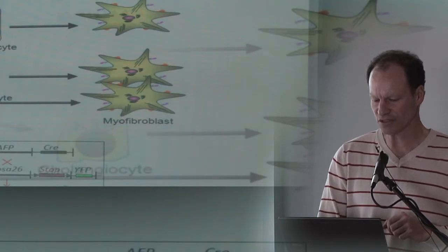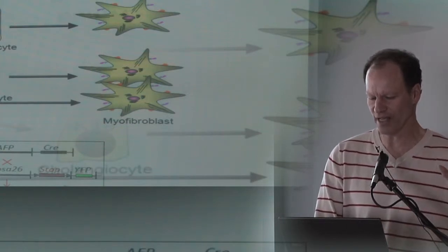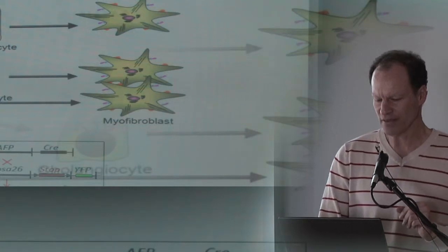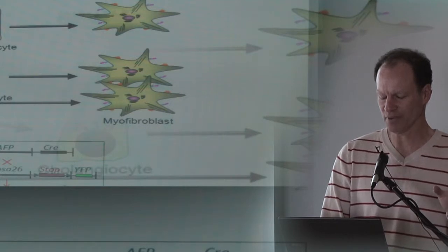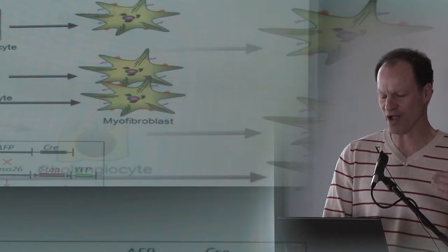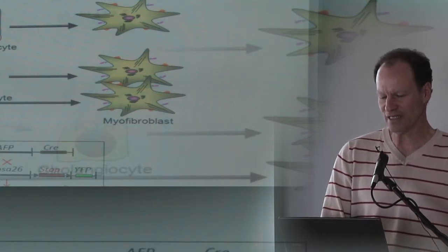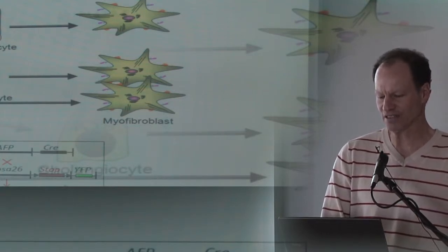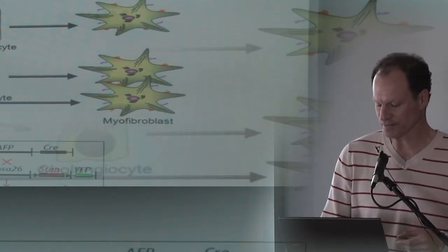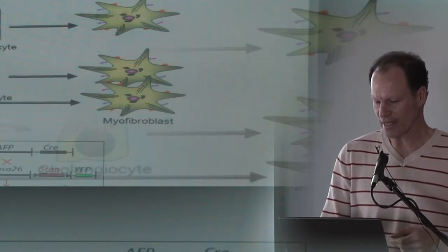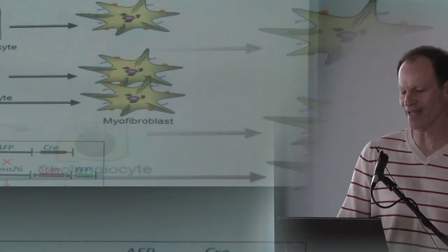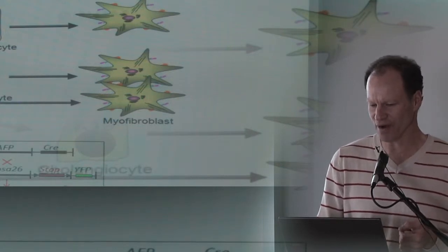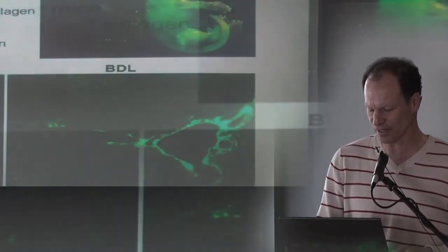The experiment works as shown below, which has become a classic way of cell fate marking. You cross the alpha-fetoprotein or albumin or cytokeratin Cre with the ROSA-26 stop YFP, so that only if you successfully excise the stop codon, will you express YFP forever. The easy question is, if you can purify the myofibroblasts, do any of them have a history of ever having expressed any of these markers?